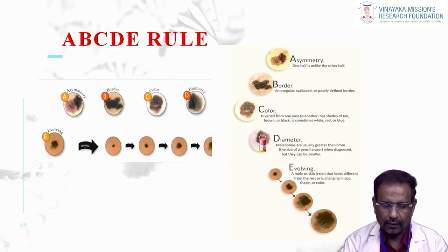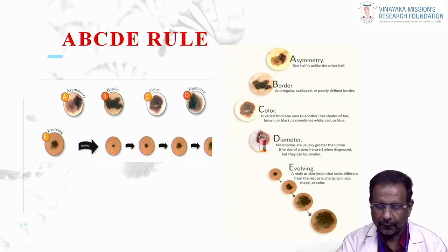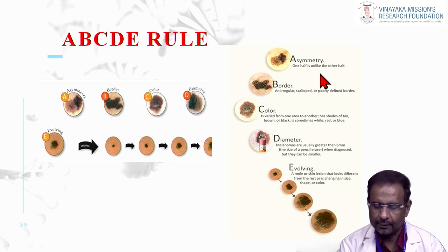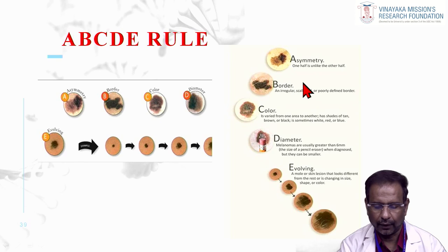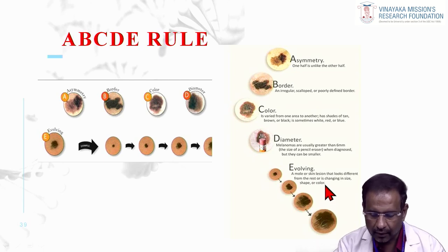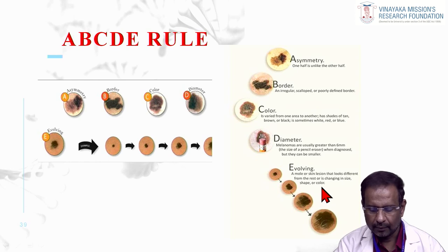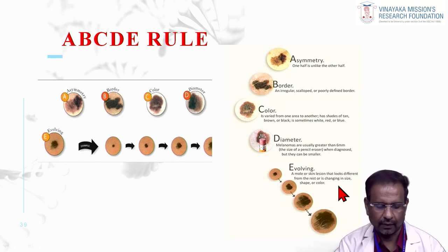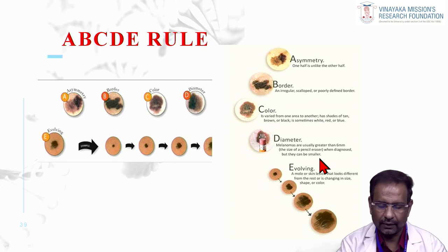Malignant melanoma is assessed using the ABCDE rule. A — Asymmetry: one half unlike the other. B — Border: very irregular, scalloped, and poorly defined. C — Color: brown to black, the most important feature. D — Diameter: greater than 6 mm. E — Evolving: the mole or skin lesion changes in size, shape, or color, beginning as a small mole and evolving into melanoma.